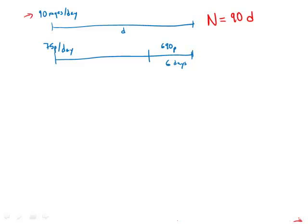Instead, she read 75 pages a day for the first bit — everything up to the last six days. So the time she was reading at 75 pages a day must be D minus 6. So she read 75 pages a day for D minus 6 days, plus the remaining 690 pages, and that would equal the total number of pages, N.